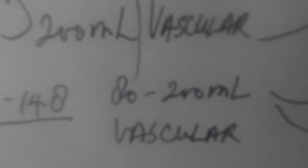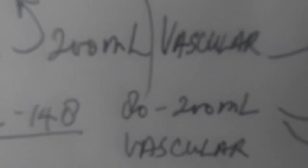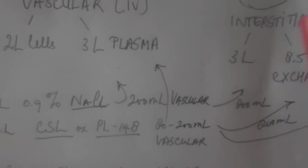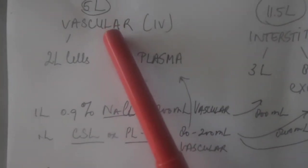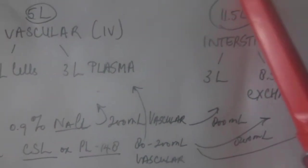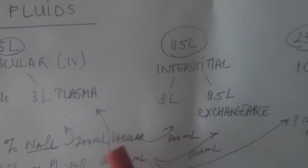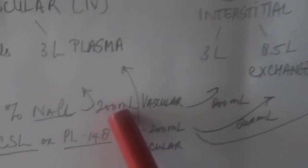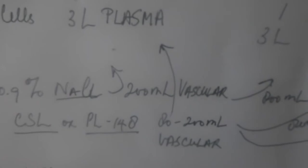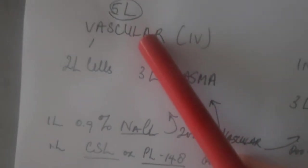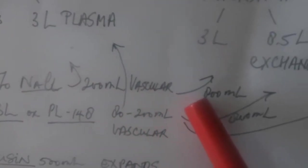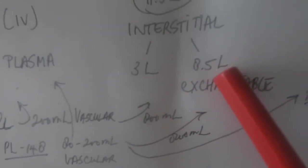And the reason being is that normal saline only distributes itself over the intervascular compartment and interstitial compartment, meaning that 200 mils go intervascularly but about 800 mils go into the interstitial area.